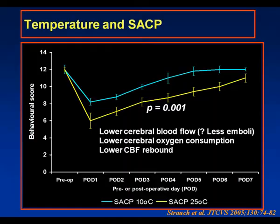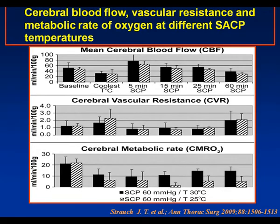Further data in a similar model looked at two SACP temperatures with constant perfusion pressure, at 30 and 25 degrees centigrade. During cooling there is a profound fall in total cerebral blood flow, which then increases with SACP at 10 mL per kilogram flow rates. Vascular resistance rises during cooling but falls during the SACP period. The cerebral metabolic rate is much lower in the lower-temperature SACP group, and this lower blood flow with its potentially protective effects is seen across all different areas of the brain.